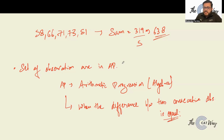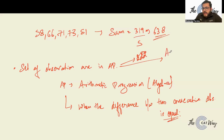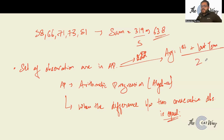When a set of observations is in an AP series, the average is nothing but the first term plus the last term, divided by two.